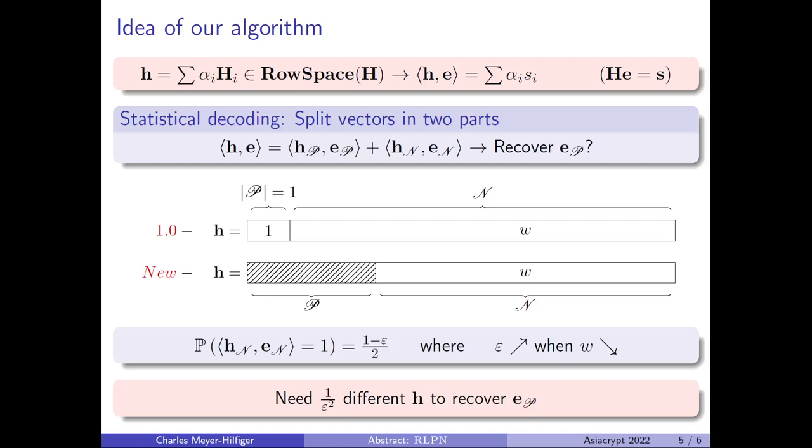And now, you have an intuition on why our algorithm works better than statistical decoding 1.0. Because we choose P bigger, we have N smaller, and thus, we are able to take W smaller.